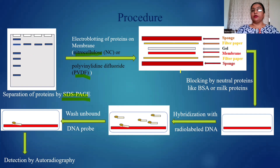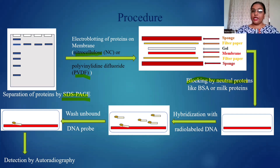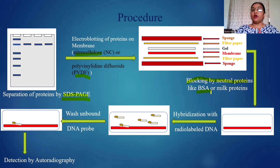After blotting, first you have to block the membrane — that is, where there is no presence of the proteins. That part on the membrane has to be covered with the help of blocking agents. Those blocking agents are neutral proteins like BSA or milk proteins.